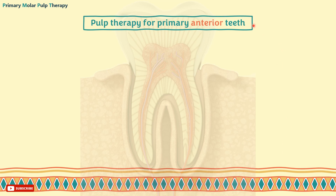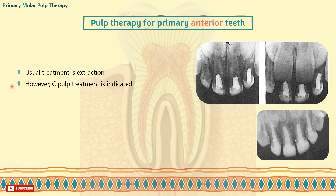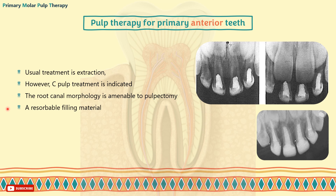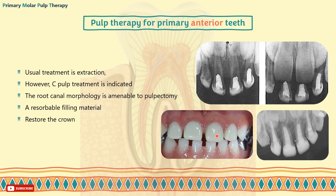Now let's discuss how to treat the pulp of anterior primary teeth. The usual treatment is extraction, since the A's and B's are exfoliated before the patient is even able to cooperate with more complicated treatments such as pulp therapy. However, the C's are exfoliated later and unilateral loss may result in centreline shifting — therefore pulp treatment is indicated for some patients. The root canal morphology is amenable to pulpectomy and the canal should be cleaned with files, taking care not to damage the underlying permanent successor. A resorbable filling material such as calcium hydroxide or zinc oxide eugenol should be used to fill the canals, not to interfere with root resorption and eruption of the permanent successor. Finally, restore the crown using a prefabricated zirconia crown for aesthetics.